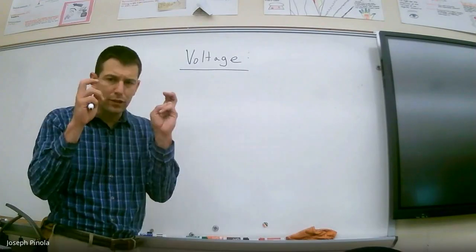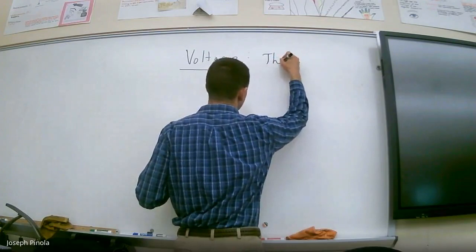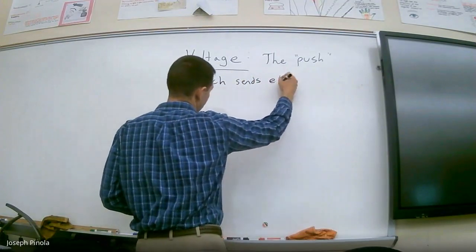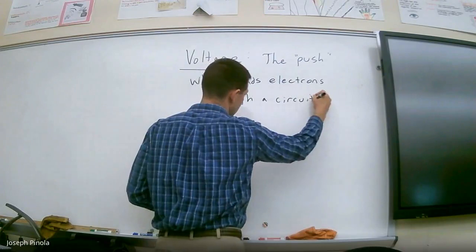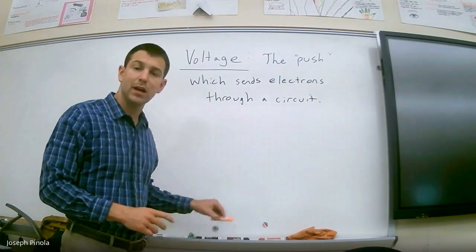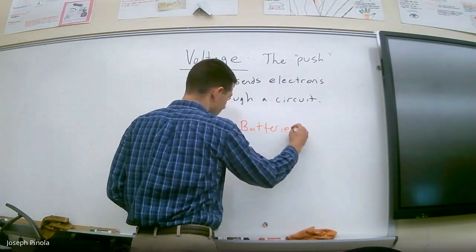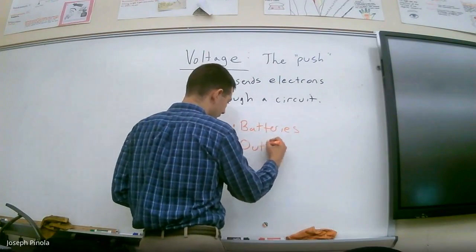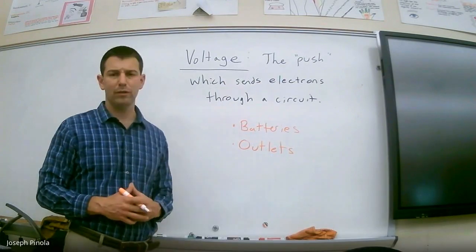Voltage is almost like the push which sends electrons through a circuit. And you can have many different sources of voltage. Here are some common sources of voltage that you might find. Batteries. If you were to plug a battery into a circuit, you would have a voltage source. Or perhaps outlets in your home. Using outlets in your home, you can also get current flowing through a circuit.